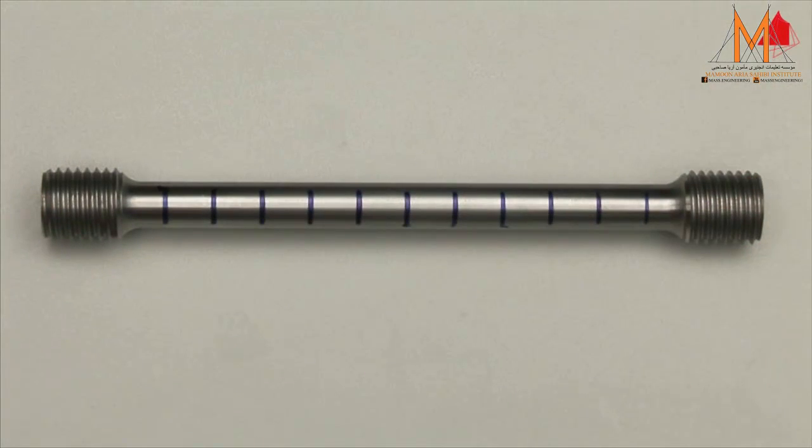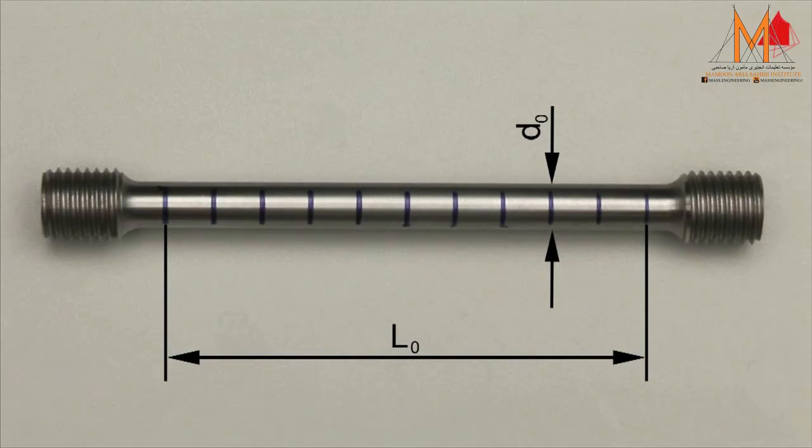This is the test piece. It has a cylindrical test region with an original diameter of 10 mm and an original gauge length of 100 mm. Within this test region, distance marks have been drawn at regular intervals. They help to visualize and measure the plastic behavior of the specimen.